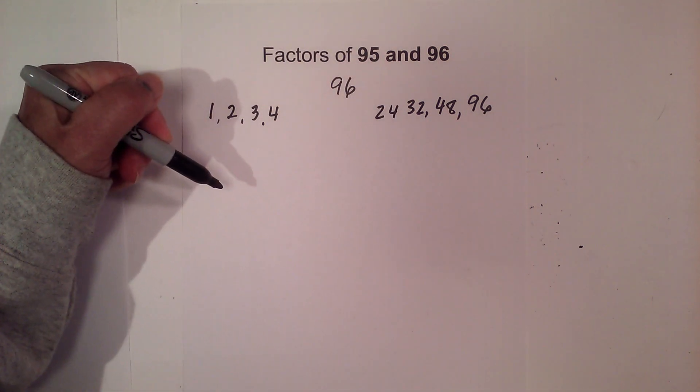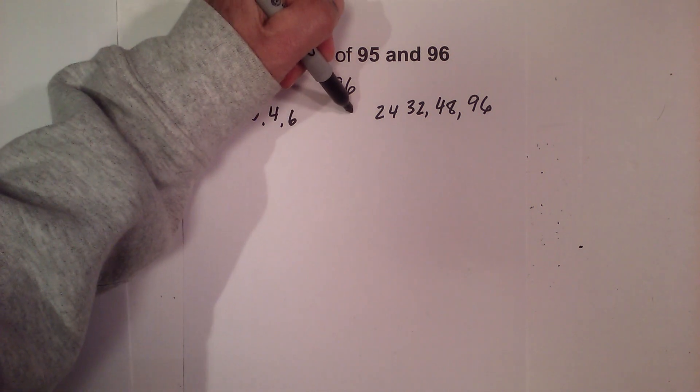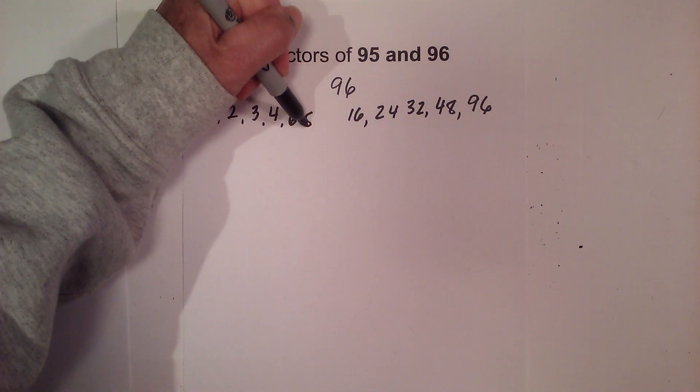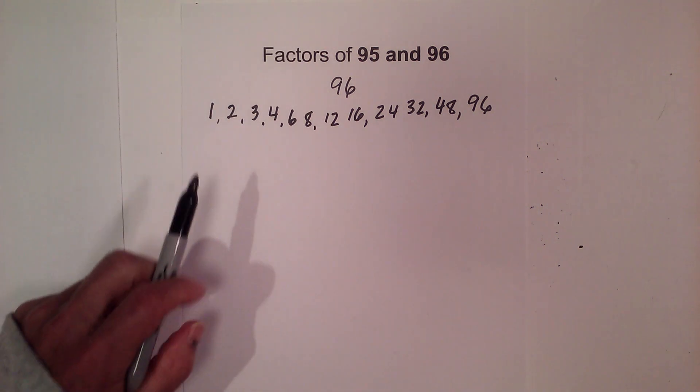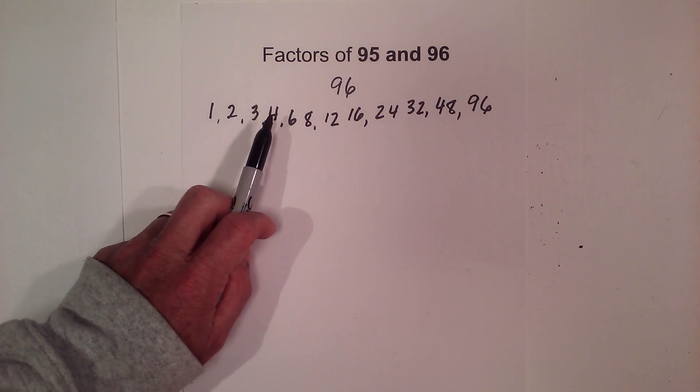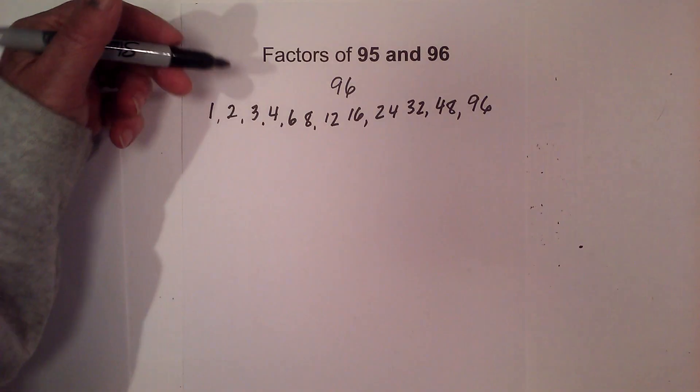And then 6 times 16, and then 8 times 12. So the factors of 96 are 1, 2, 3, 4, 6, 8, 12, 16, 24, 32, 48, and 96.